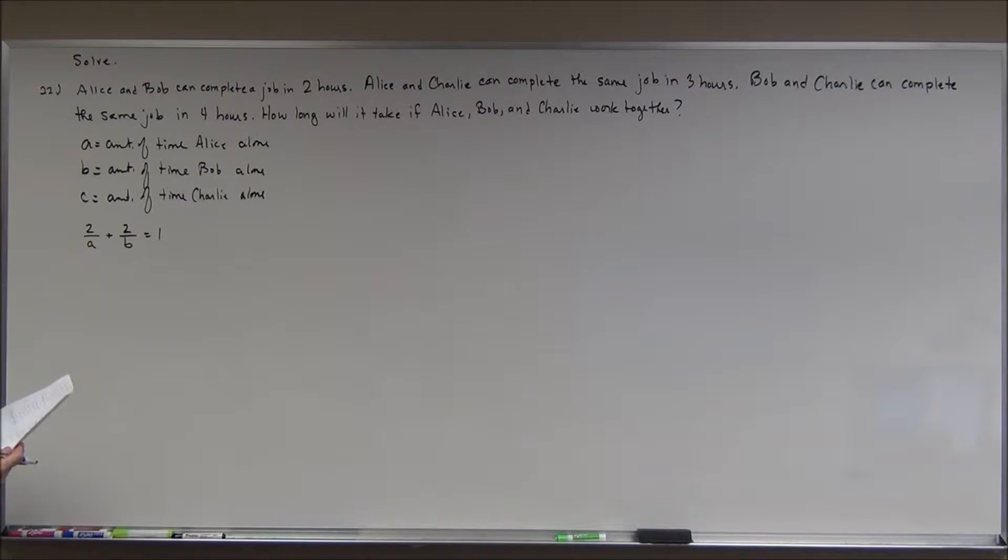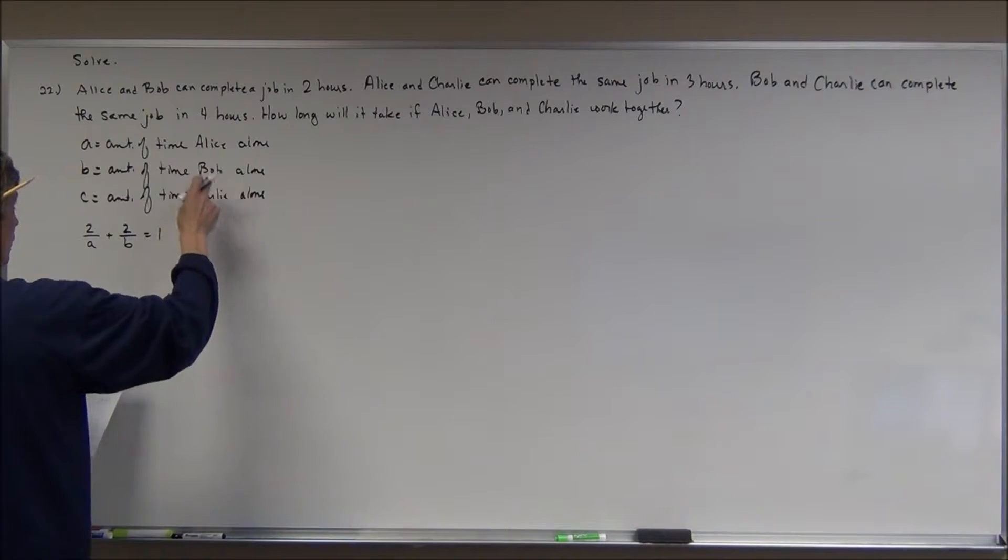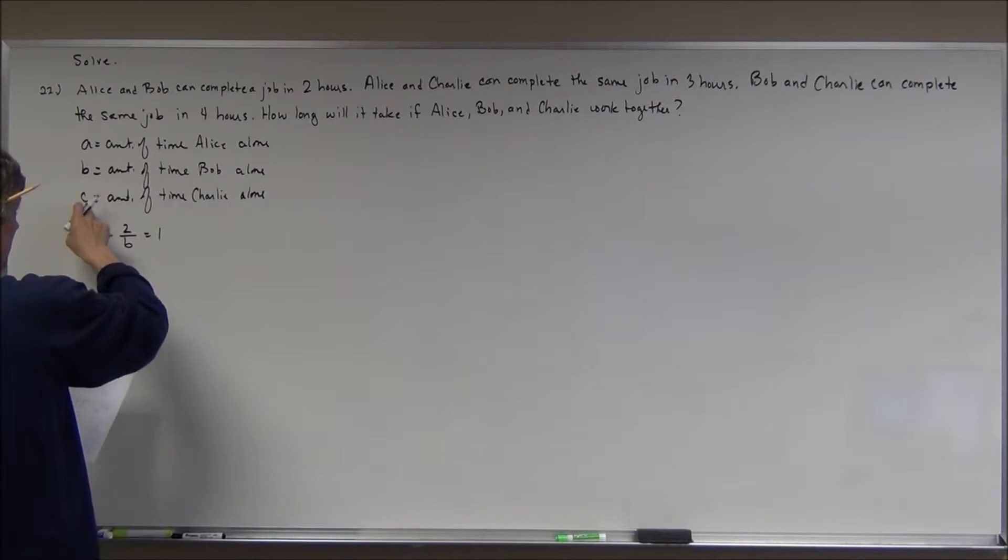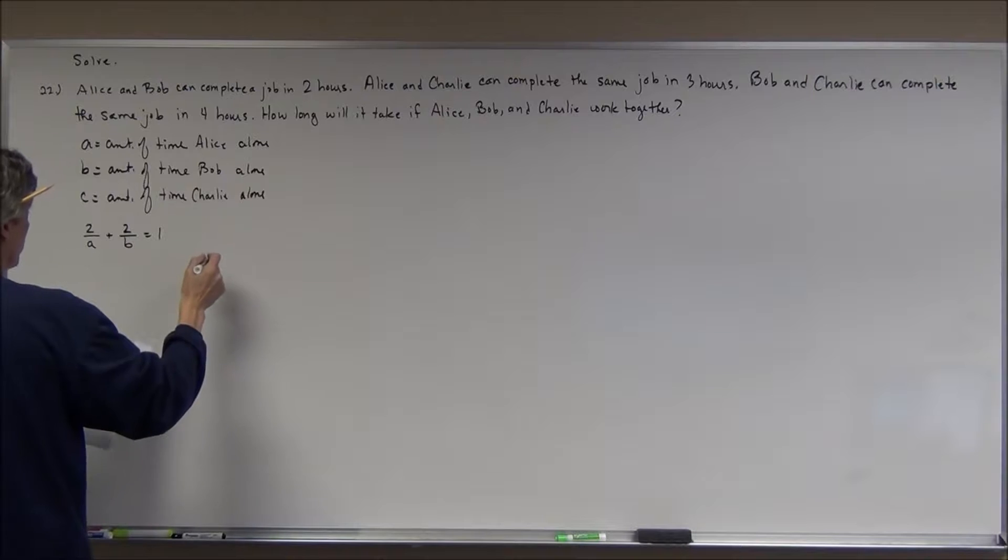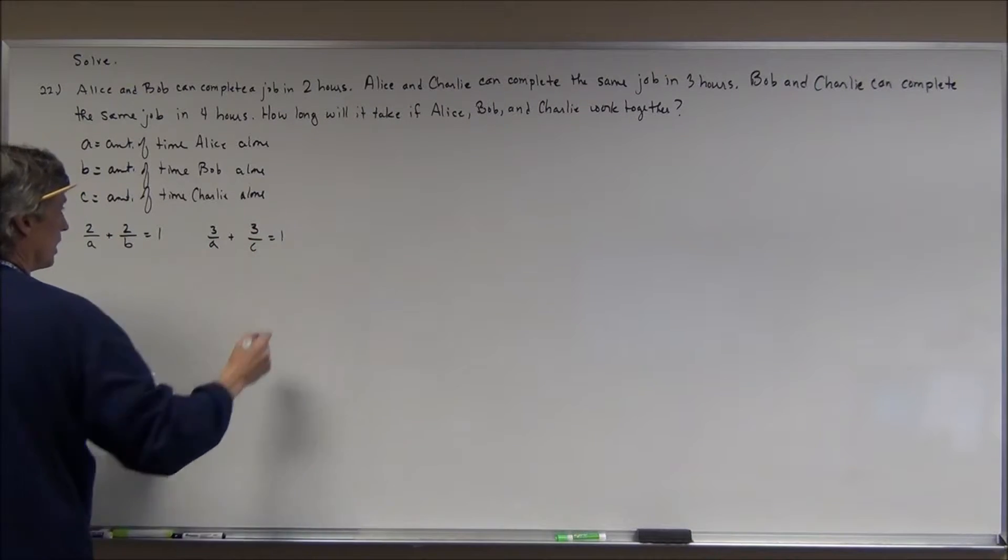Then in the second sentence, it says Alice and Charlie can complete the same job in three hours. In three hours, Alice and Charlie. So, very similarly, A and C hours for them working alone respectively. Alice, if she works three hours, can get 3 out of A. Charlie can get 3 out of C. And working together, they get one job done.